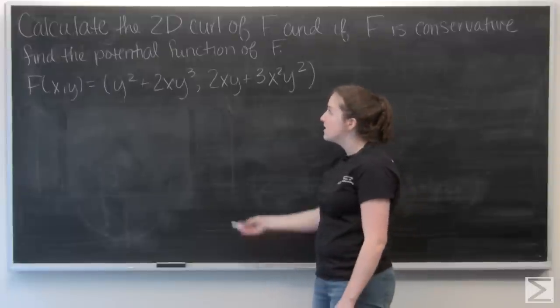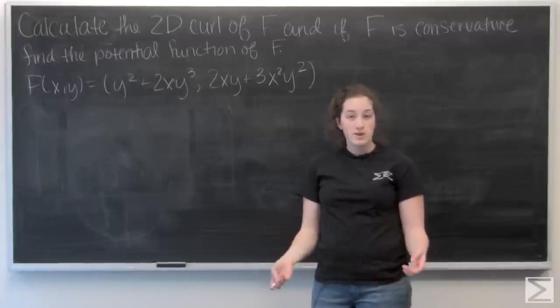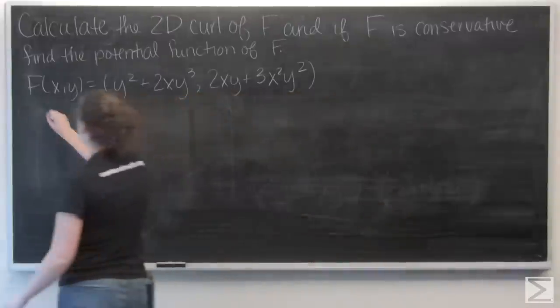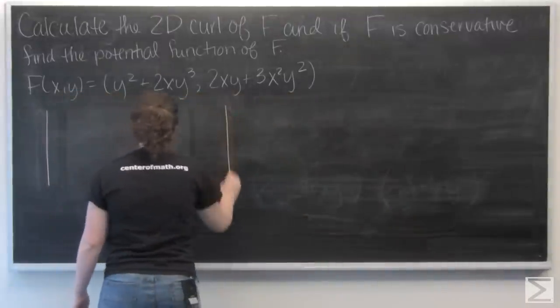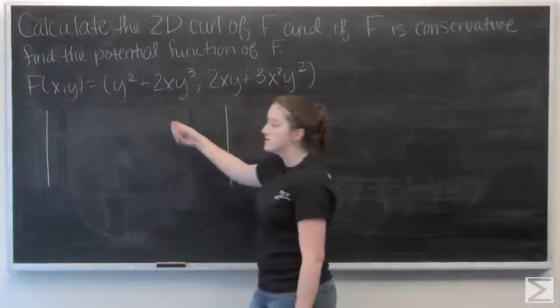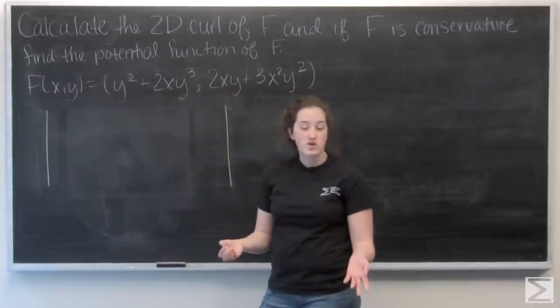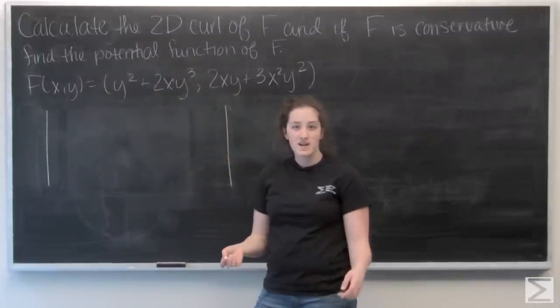So let's recall how to calculate two-dimensional curl. It's the determinant of a two-by-two matrix, and the first row is going to be partial derivatives: d/dx and d/dy.